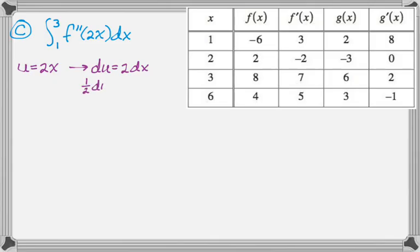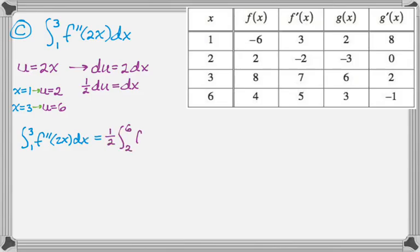Which means that du is 2 dx, but specifically 1 half du is equal to dx. So I can sub in for dx, I can sub in for 2x, and then I need to change the 1 and the 3 to u values. So if x is 1, then u is 2, and if x is 3, then u is 6. So I can rewrite the entire integral now to be the integral from 1 to 3 of f double prime of 2x dx is 1 half, the integral from 2 to 6 of f double prime of u du.